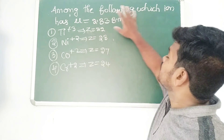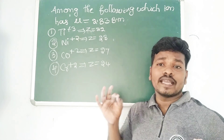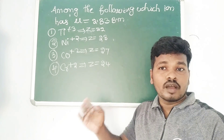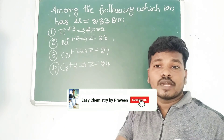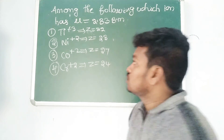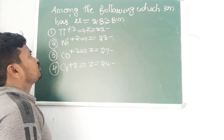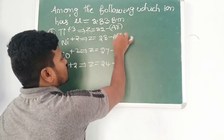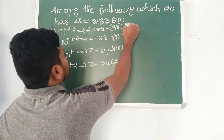Now let's see a question: among the following, which ion has a magnetic moment value equal to 2.83 Bohr magnetons? Since 2.83 corresponds to two unpaired electrons, we need to find the ion containing two unpaired electrons. They have given the atomic numbers, so let's write the electronic configurations — starting with titanium.